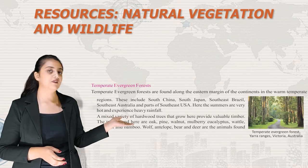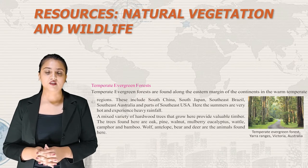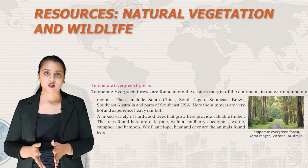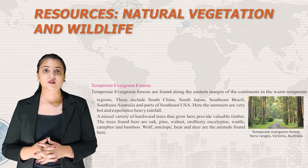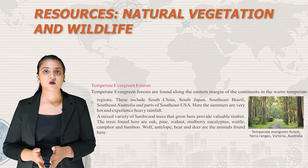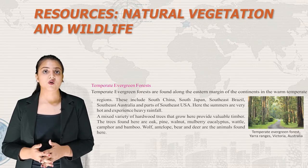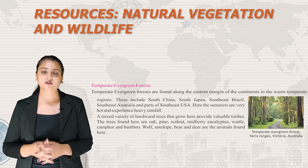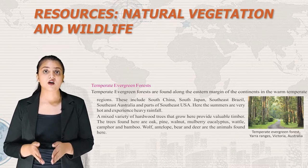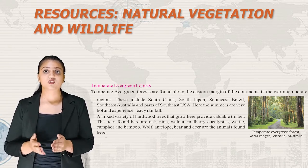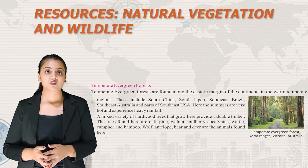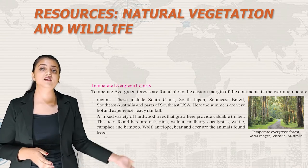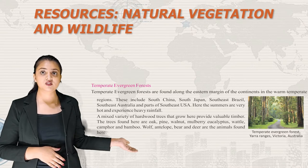Temperate evergreen forests are found along the eastern margin of continents in warm temperate zones, including South China, South Japan, Southeast Brazil, Southeast Australia and parts of Southeast USA. Summers are very hot with heavy rainfall. A mixed variety of hardwood trees provide valuable timber, including Oak, Pine, Walnut, Mulberry, Eucalyptus, Wattle, Camphor and Bamboo. Wolf, Antelope and Deer are the animals found here. Here is an image of a temperate evergreen forest in the Yarra Ranges, Victoria, Australia.